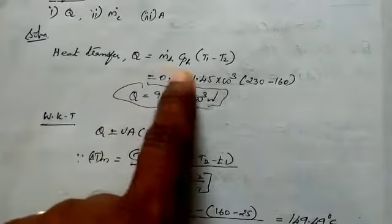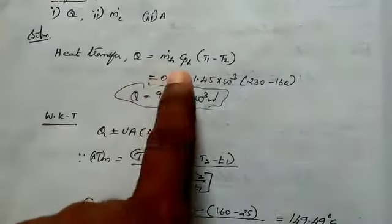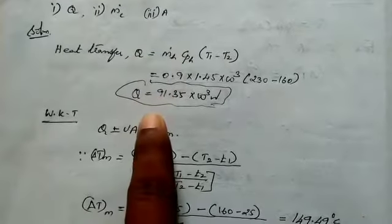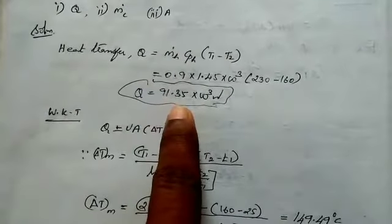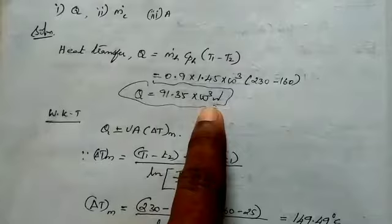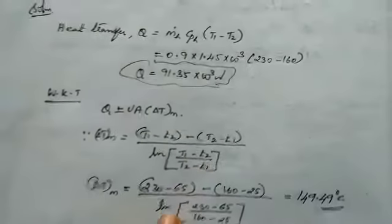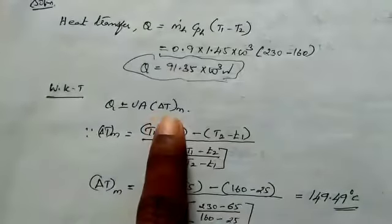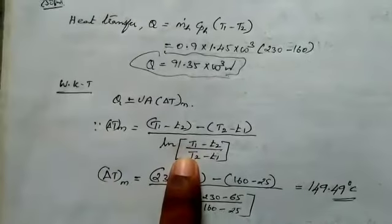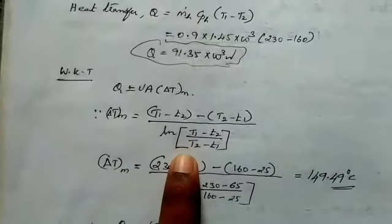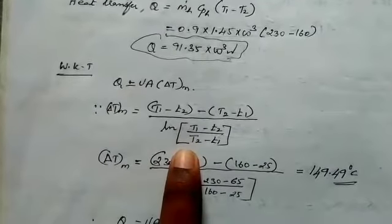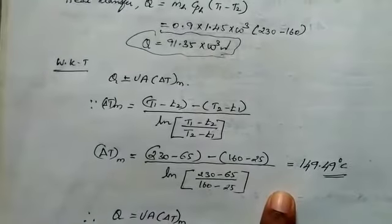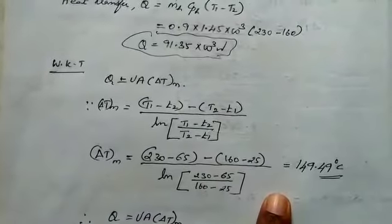We calculate QH. The rate of heat transfer QH = 0.9 × 1450 × (230 - 160) = 91,350 Watts. For area, Q = U × A × delta Tlm. For counter flow, delta Tlm = 149.49 degree Celsius.